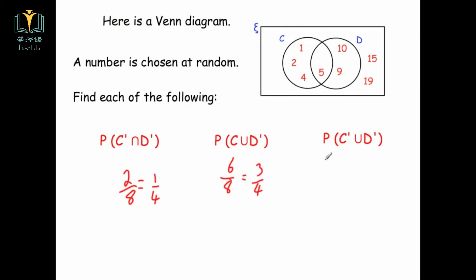For the probability of C' ∪ D' (not C or not D): not C includes that number, 10, 9, 15, and 19. Not D includes 15, 19, 1, 2, and 4. Because it's union, we accept any number satisfying either condition. Combining all ticked numbers gives 7 numbers, so the probability of C' ∪ D' is 7/8.